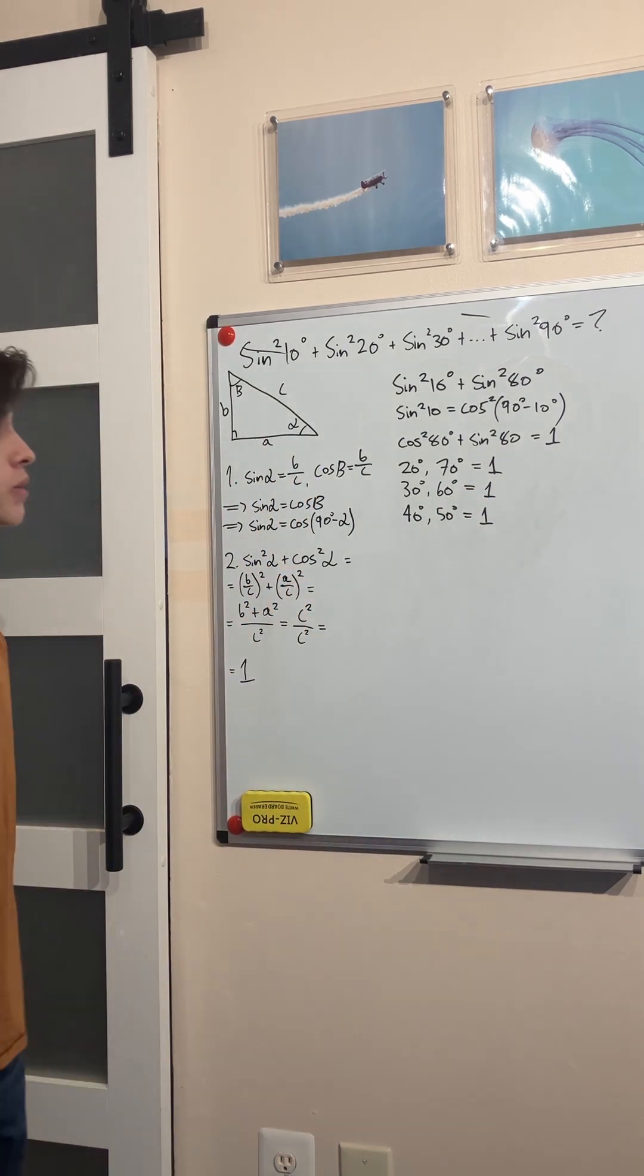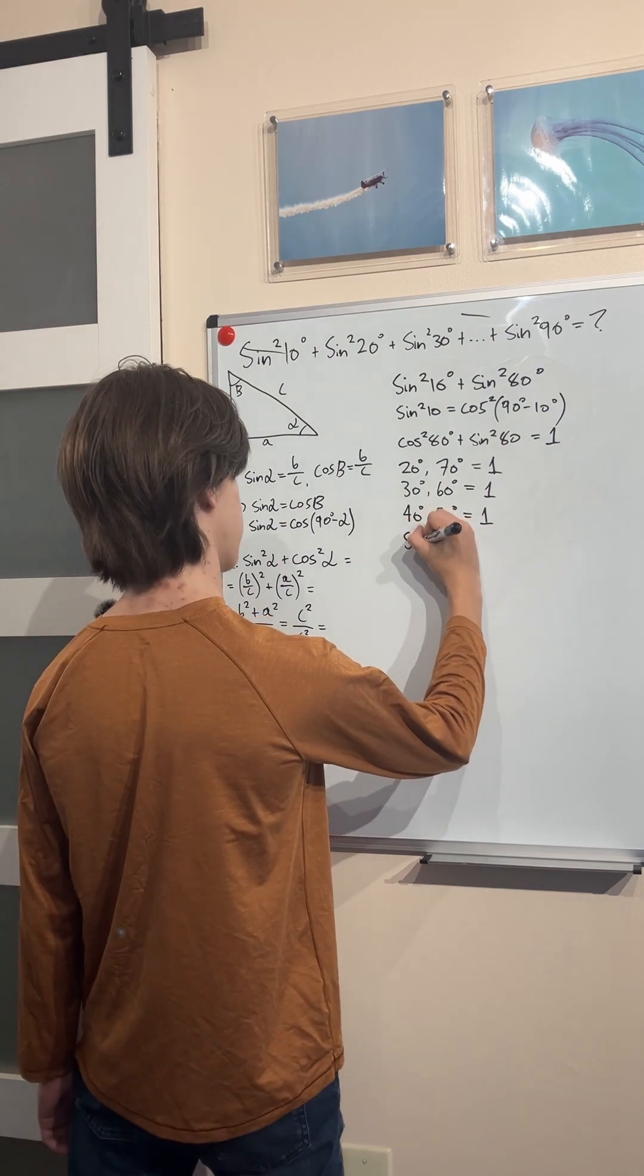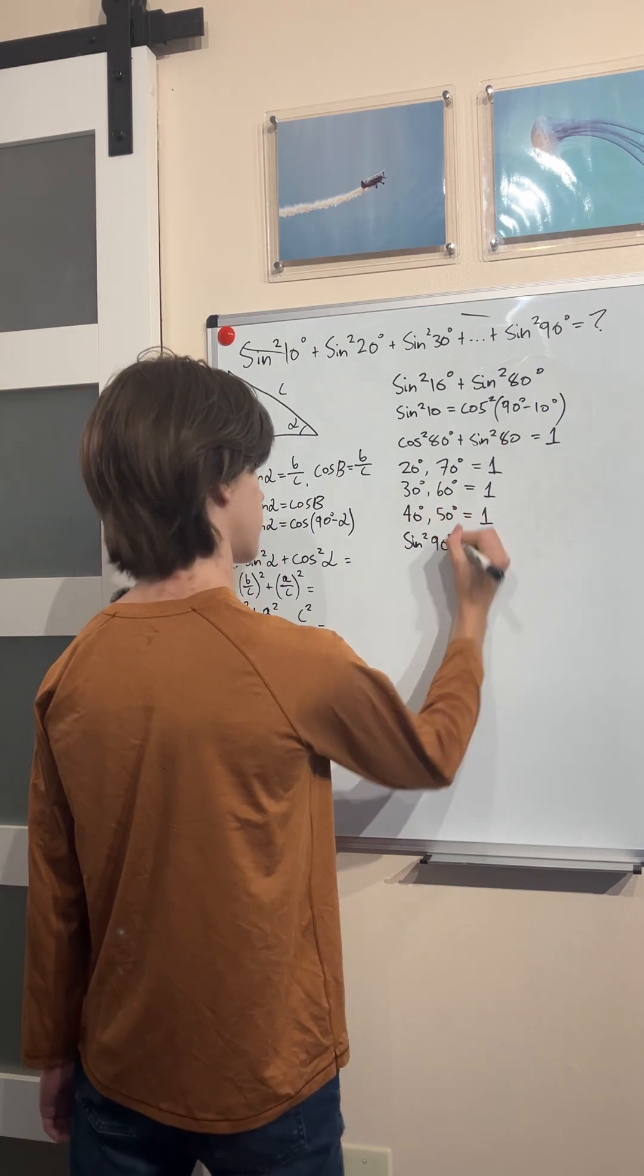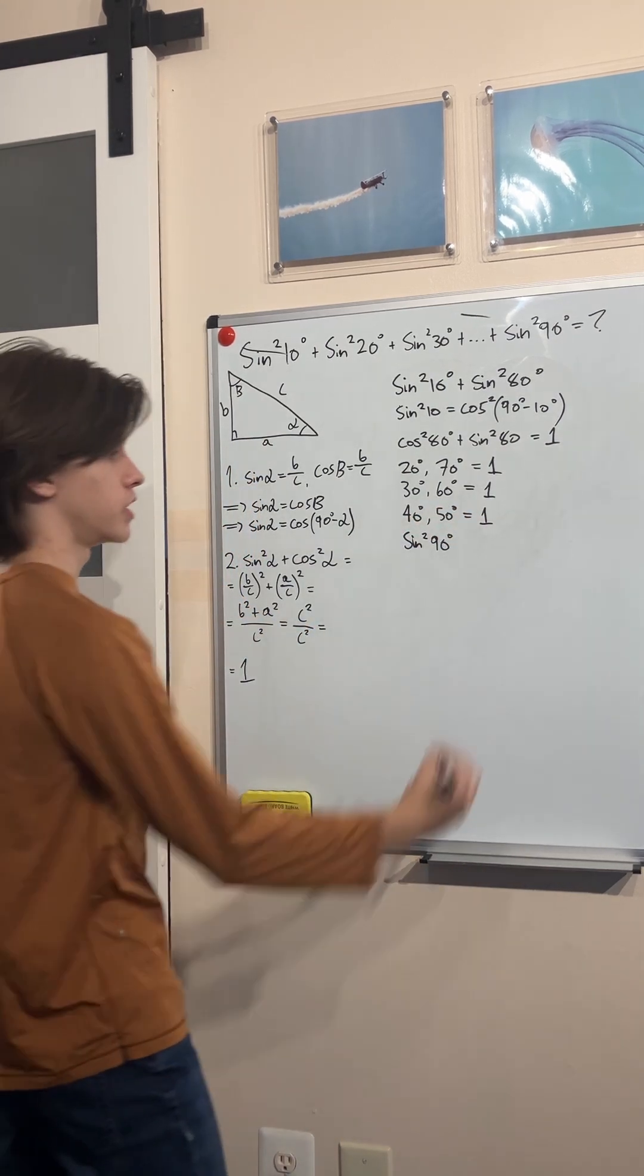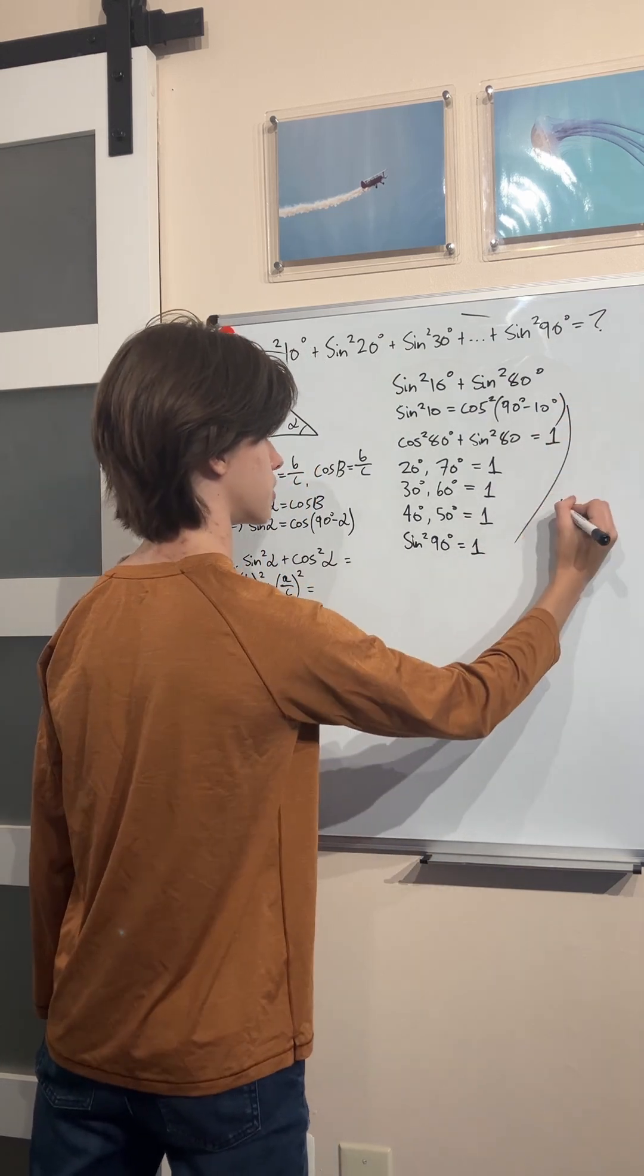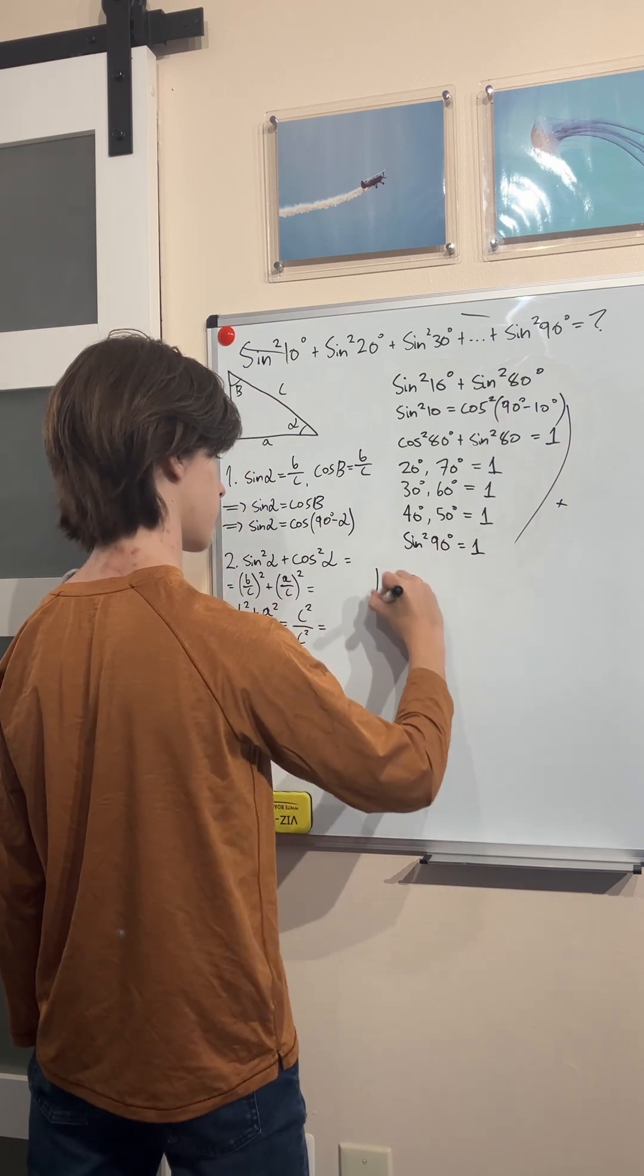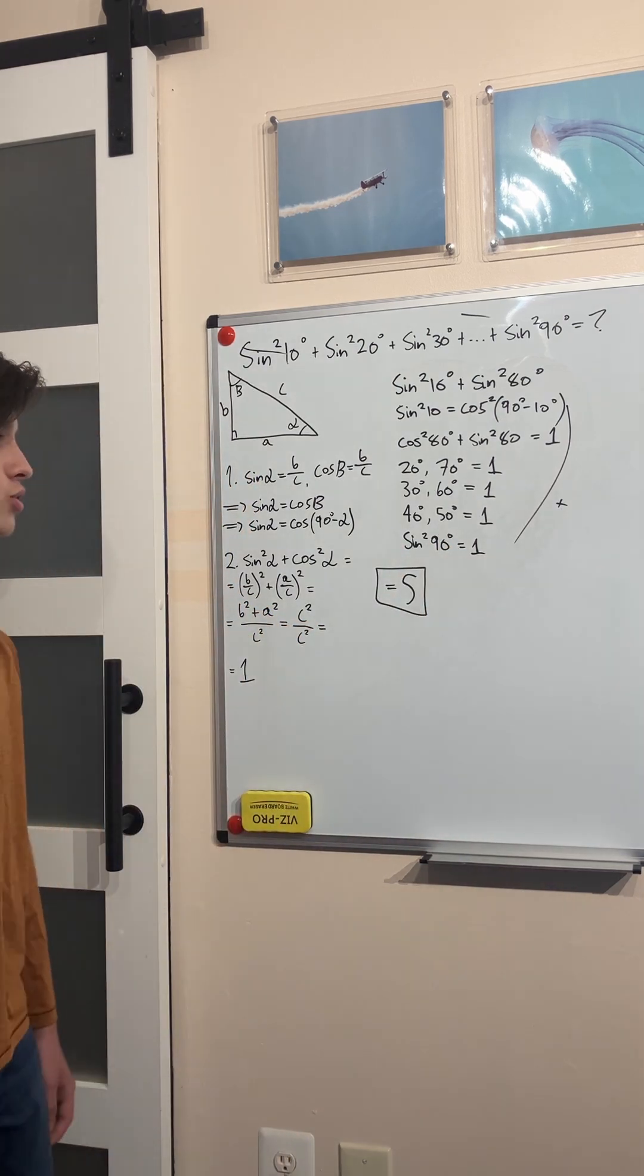Then 40 and 50 is equal to one. And so we're left with just one more angle, which is of course the sine squared of 90. Sine of 90 degrees is equal to one. And so adding all of them together is equal to five. So this sum is just equal to five.